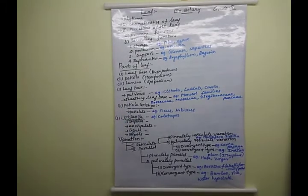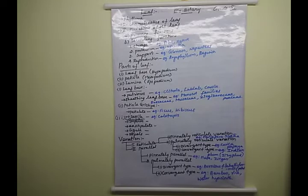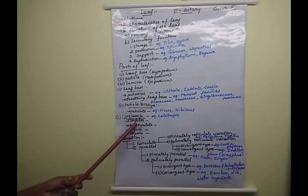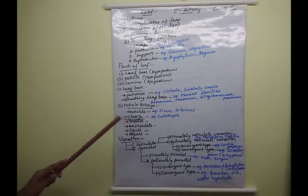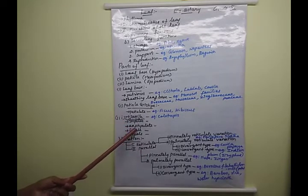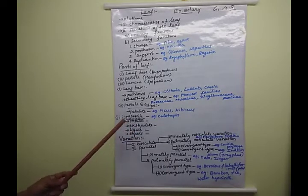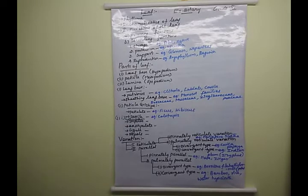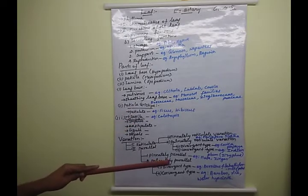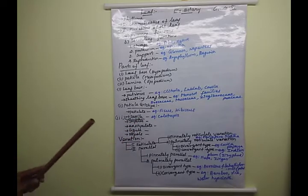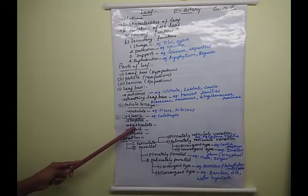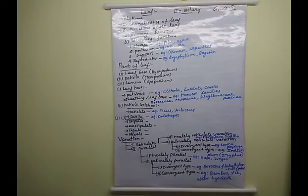A leaf with stipules is called a stipulate leaf. A leaf without stipules is called an exstipulate leaf. So: presence of stipules — stipulate leaf; absence of stipules — exstipulate leaf.